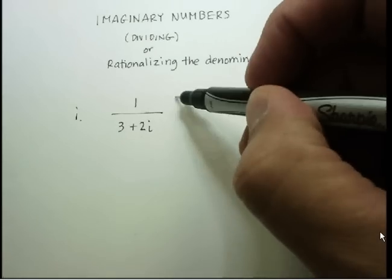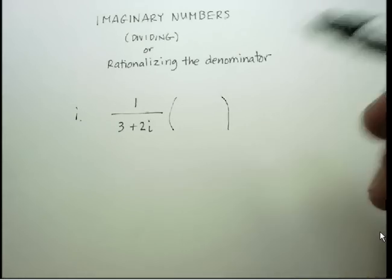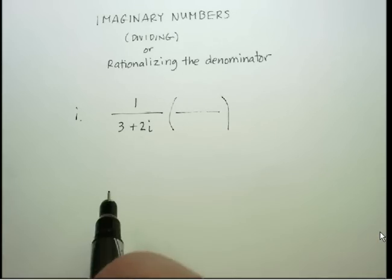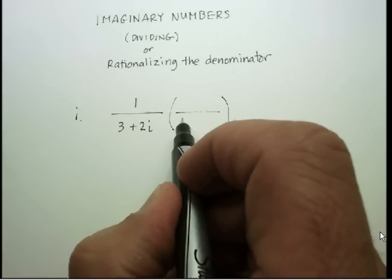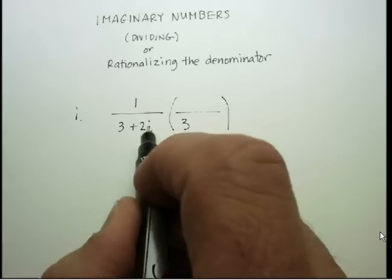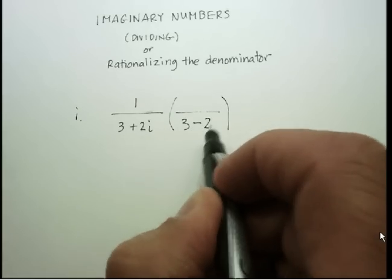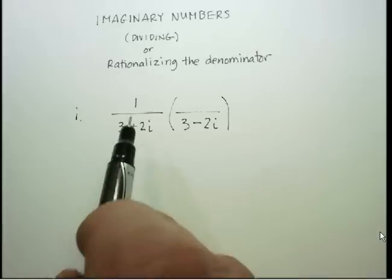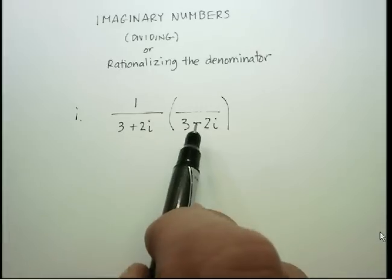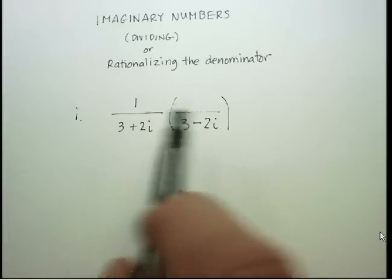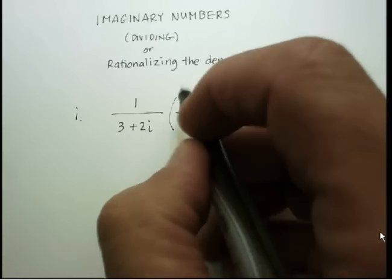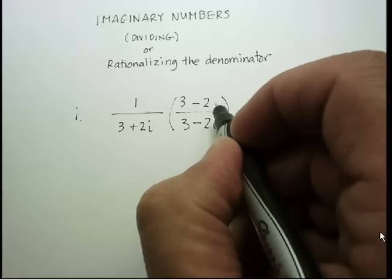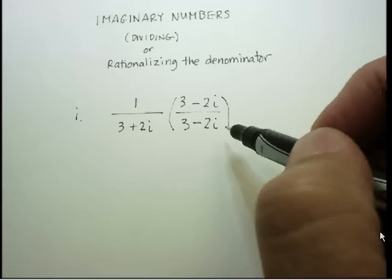You always want to try to rationalize it or get it up into the numerator. If you remember your radical expressions, you can multiply any binomial by its conjugate. The conjugate is just the same terms with the sign in between changed to the opposite — if you have a plus, change it to a minus, and vice versa.